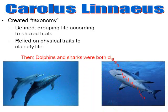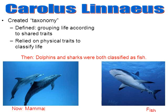During the time of Linnaeus, dolphins and sharks were both classified as fish because when you look at them, they look very physically similar. Nowadays, we know that dolphins are mammals and that sharks are fish. Mammals like dolphins have lungs, and sharks, which are fish, have gills. We've learned that there are a lot more ways to interpret classification besides just physical features.